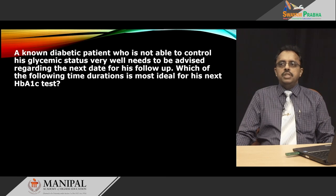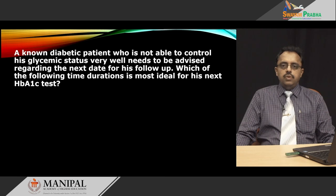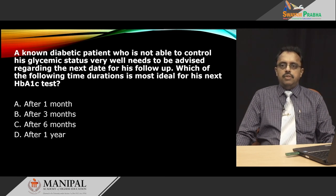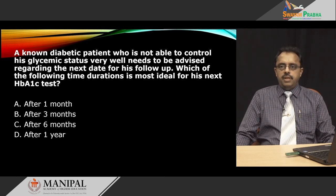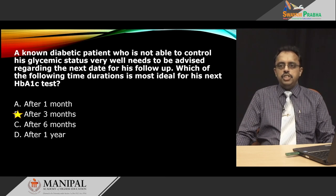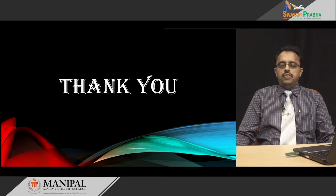Practice question 3: A known diabetic patient who is not able to control his glycemic status well needs to be advised when to come for his next HbA1c test. What is the most ideal time duration — after 1 month, 3 months, 6 months, or 1 year? The right answer is after 3 months, because HbA1c tells us about glycemic status over the preceding 3 months, and patients not well controlled need to be tested once every 3 months. If well controlled, testing after 6 months would be appropriate. Thank you very much.